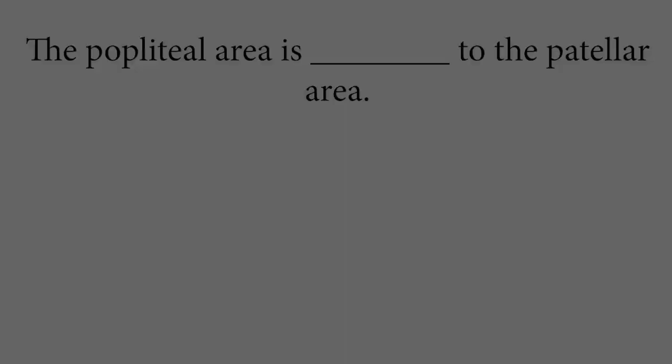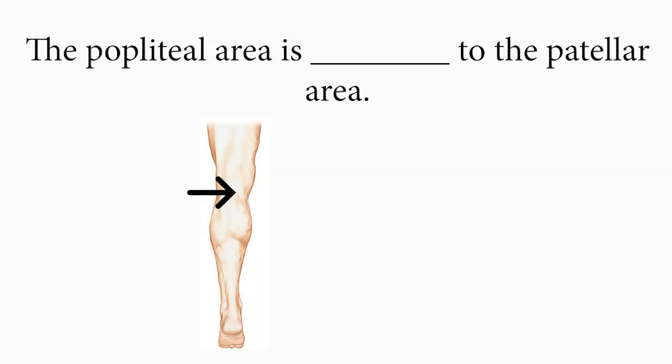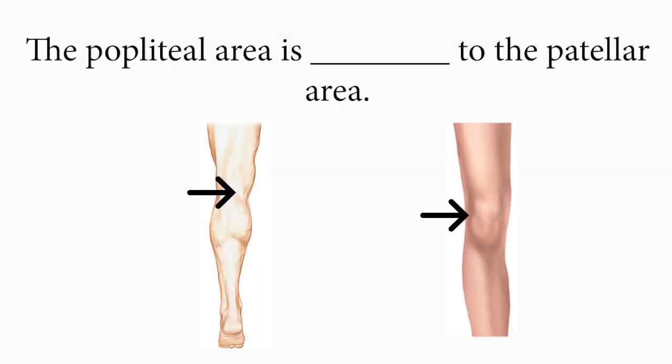It looks like our patient is going to be okay. All right guys, come on over — let's stitch them up. And while they're doing that, let's see what you remember. The popliteal area is ___ to the patellar area. If you said posterior or dorsal, you are correct. The popliteal area is behind the patellar area. Remember: you gotta pat and pop.